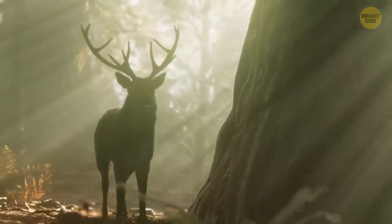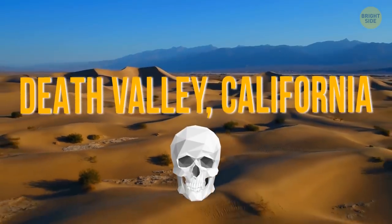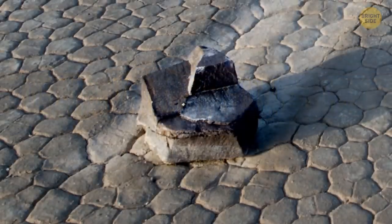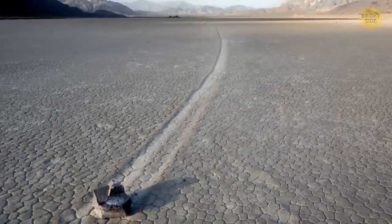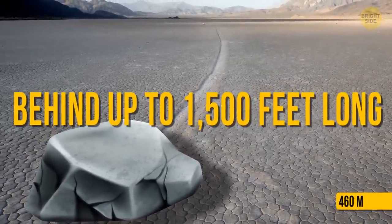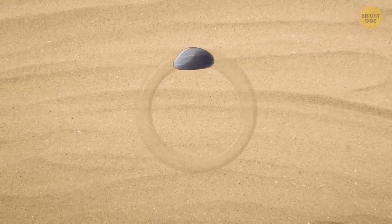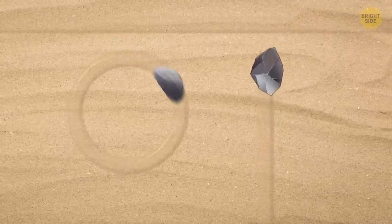Earth is a magical planet where even rocks can walk, at least some of them, in Death Valley, California. They leave trails so you can record the path they've passed. Some of those biggest rocks have left tracks behind up to 1,500 feet long. Smooth-bottomed rocks wander around, while those with rough surfaces tend to leave straight tracks.